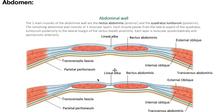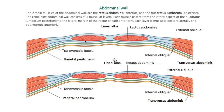Let's talk about the abdominal wall. There are two main muscles to remember: the rectus abdominis on the anterior side, and the quadratus lumborum on the posterior side.